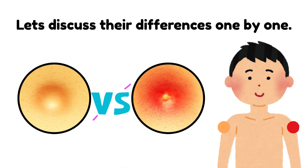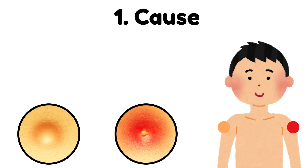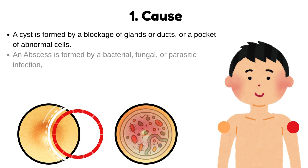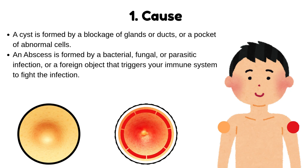Let's discuss their differences one by one. Cause: a cyst is formed by a blockage of glands or ducts, or a pocket of abnormal cells. An abscess is formed by a bacterial, fungal, or parasitic infection, or a foreign object that triggers your immune system to fight the infection.